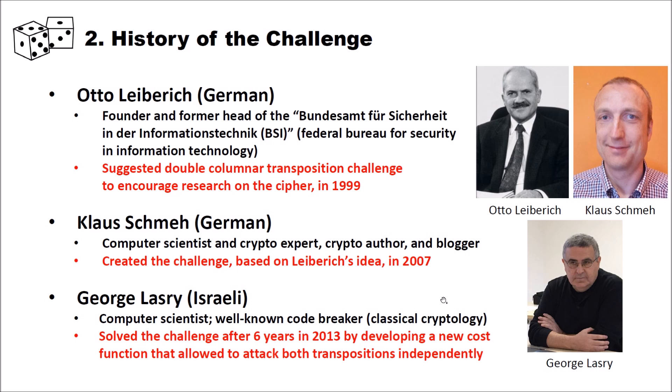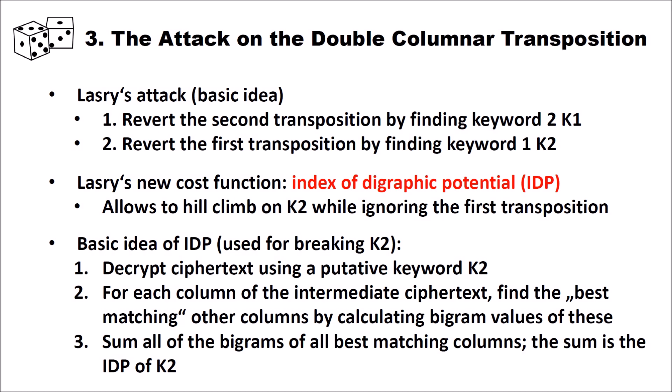So how does the attack that George Lasry developed work? The basic idea is: first, revert the second transposition by finding keyword two, and then revert the first transposition by finding keyword one. He invented a new cost function called the Index of Digraphic Potential, or IDP, which allows hill climbing on the second key while ignoring the first transposition.